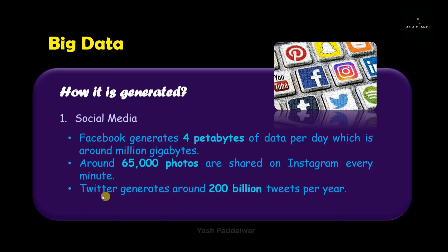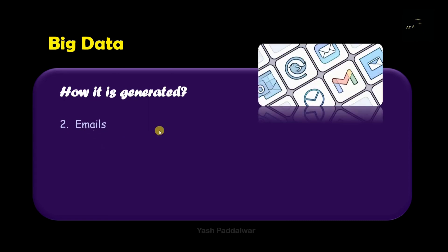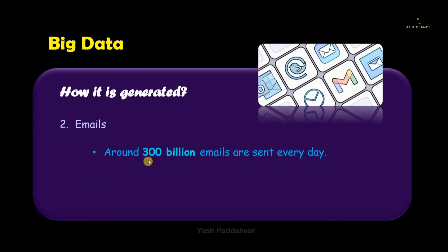This image data has to be stored in a structured format. Twitter generates 200 billion tweets per year — each tweet can contain textual, image, video, or audio data. So you can see how much big data is generated from social media alone. Next, we have emails. For every official work, from sending a letter to the principal to receiving an offer letter from a company, everything is done via email. Around 300 billion emails are sent every day.